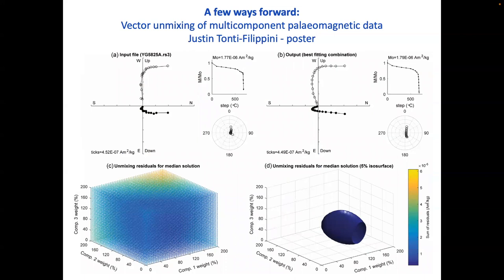Justin just published a method similar to what Brendan showed — exciting work. He has 800-million-year-old rocks with three components of magnetization, and his method identifies the corrected data and tells you how much of each component went into the original Zijderveld diagram. He has a poster out there and published this last week.